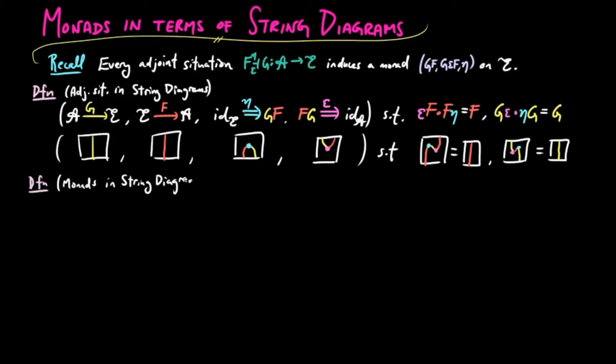For a monad in string diagrams, we have the endofunctor T, a natural transformation mu called the multiplication, and eta called the unit, satisfying the associative law for multiplication and the unit law.